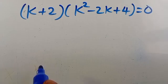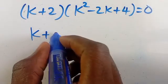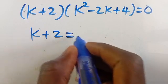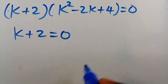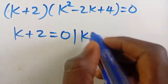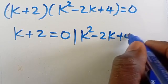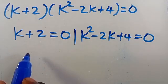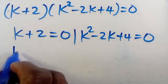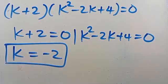From here, we have either k plus 2 equals 0, giving us k equals negative 2 as one solution, or k squared minus 2k plus 4 equals 0, which is our second equation to solve.